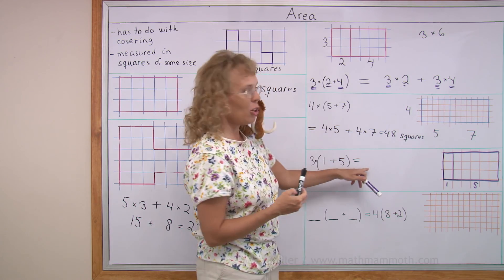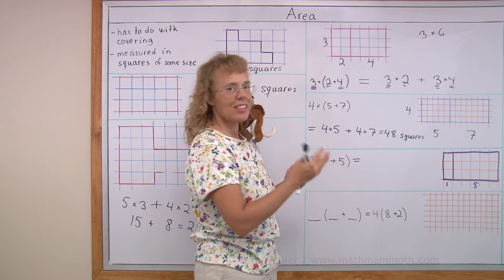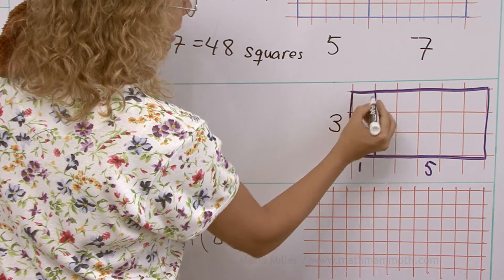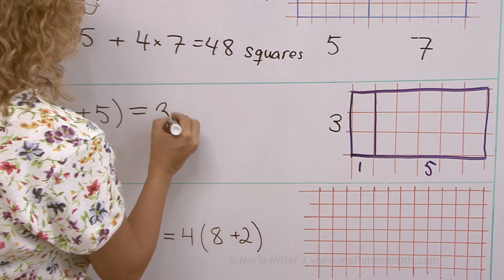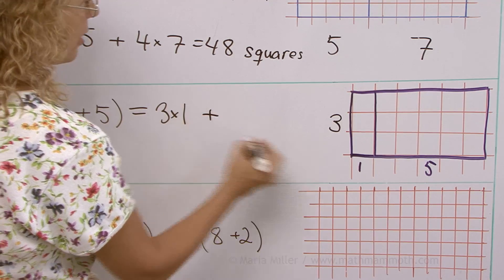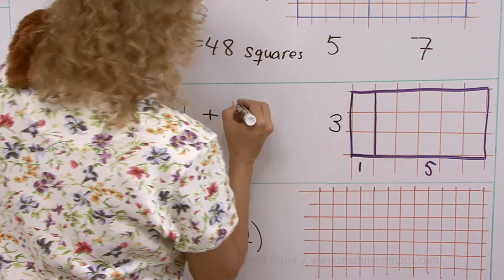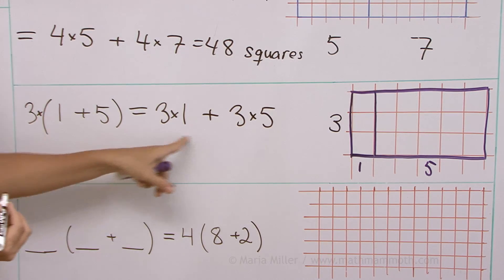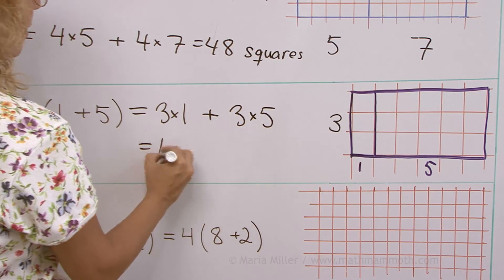And then also write the area as the sum of two rectangles. This rectangle is 3 times 1. Add to that 3 times 5 rectangle. OK. And the total area is 3 plus 15. 18.